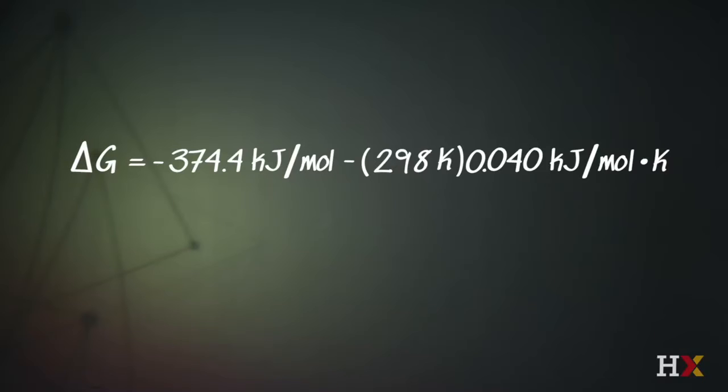Now that gives us a delta G of minus 386.4 kilojoules per mole.